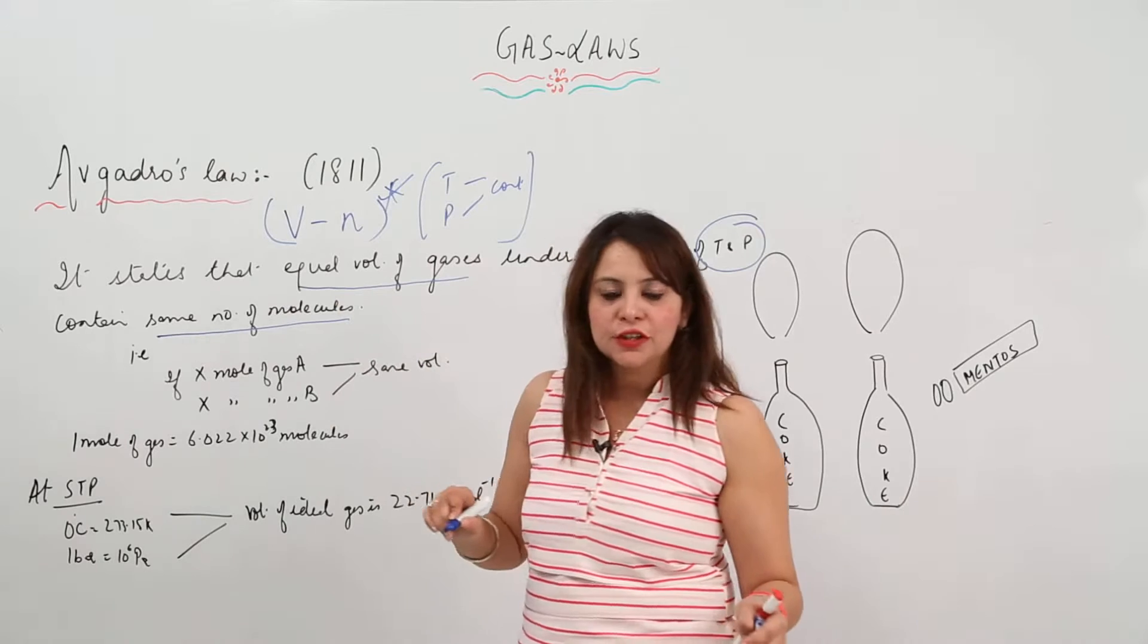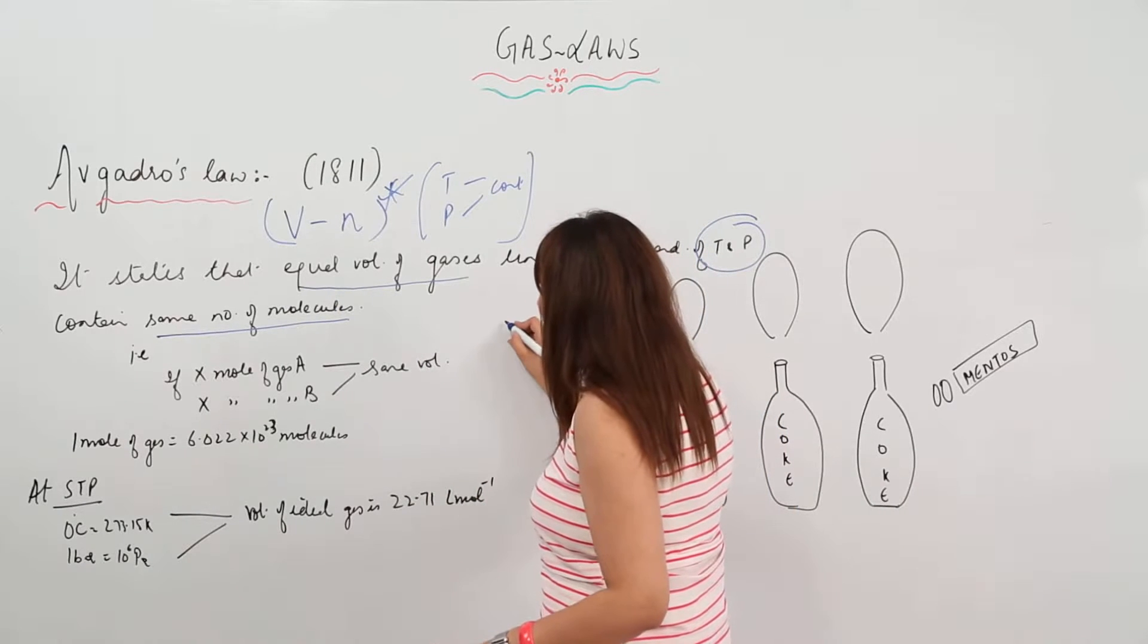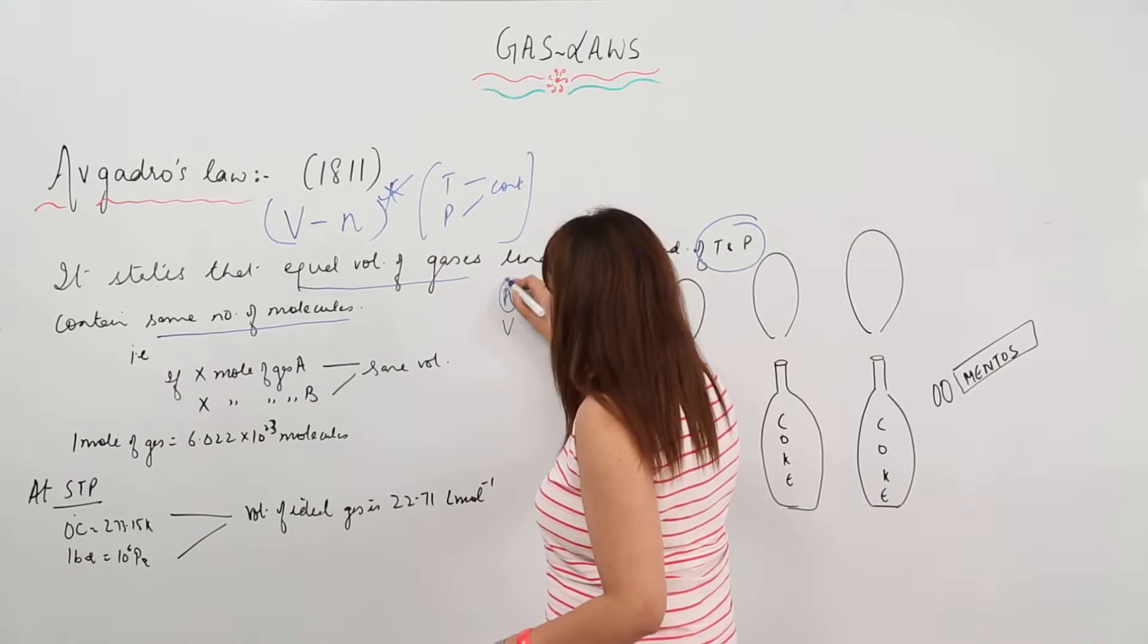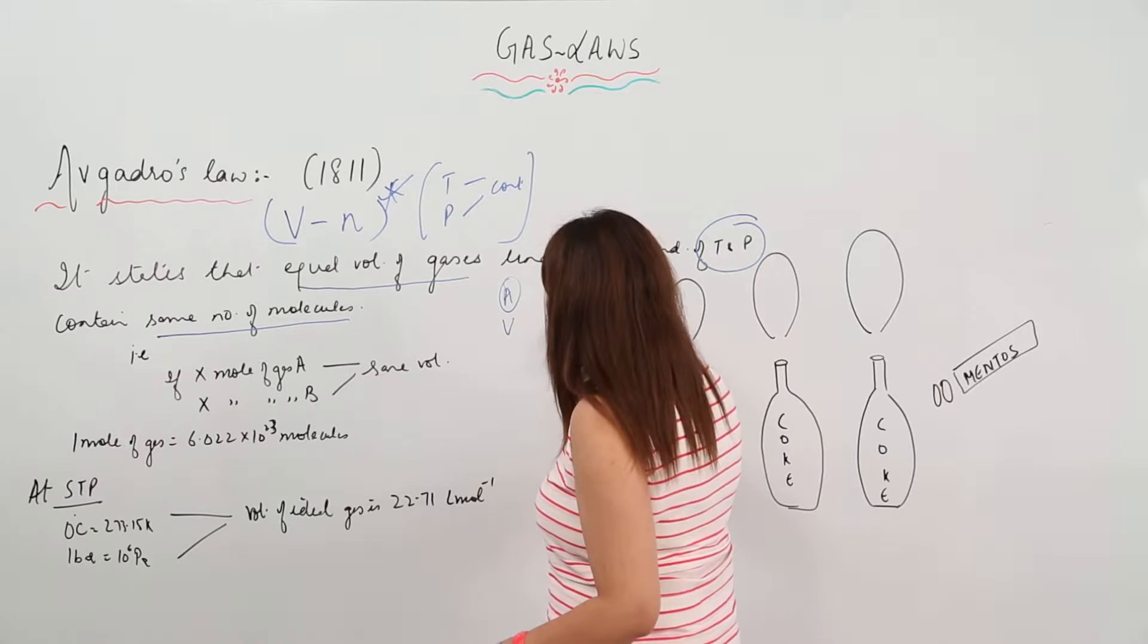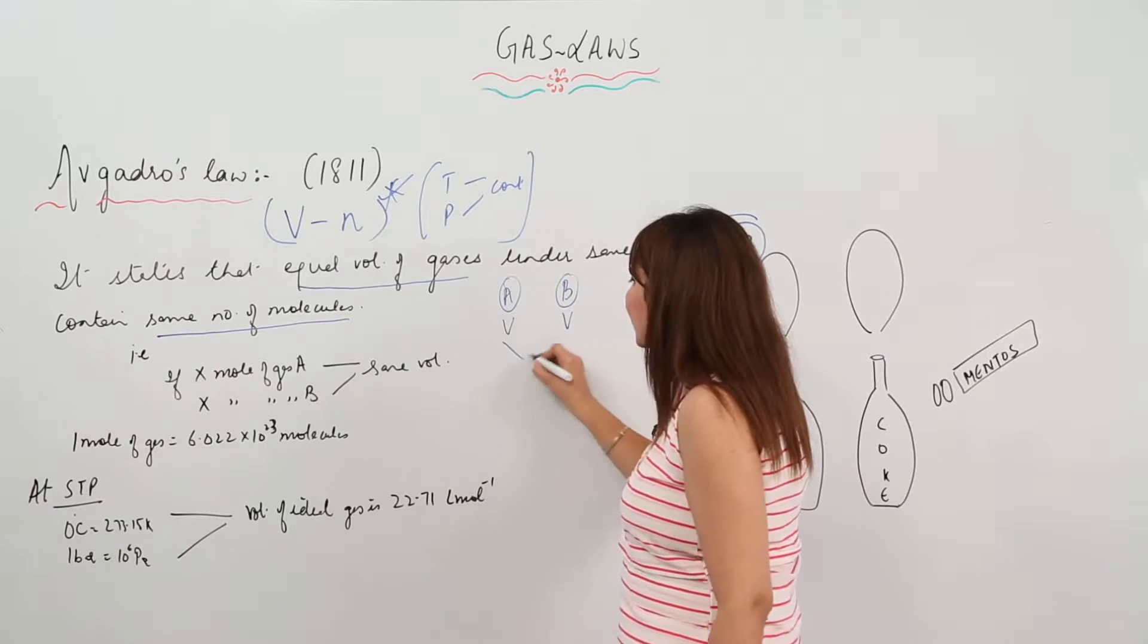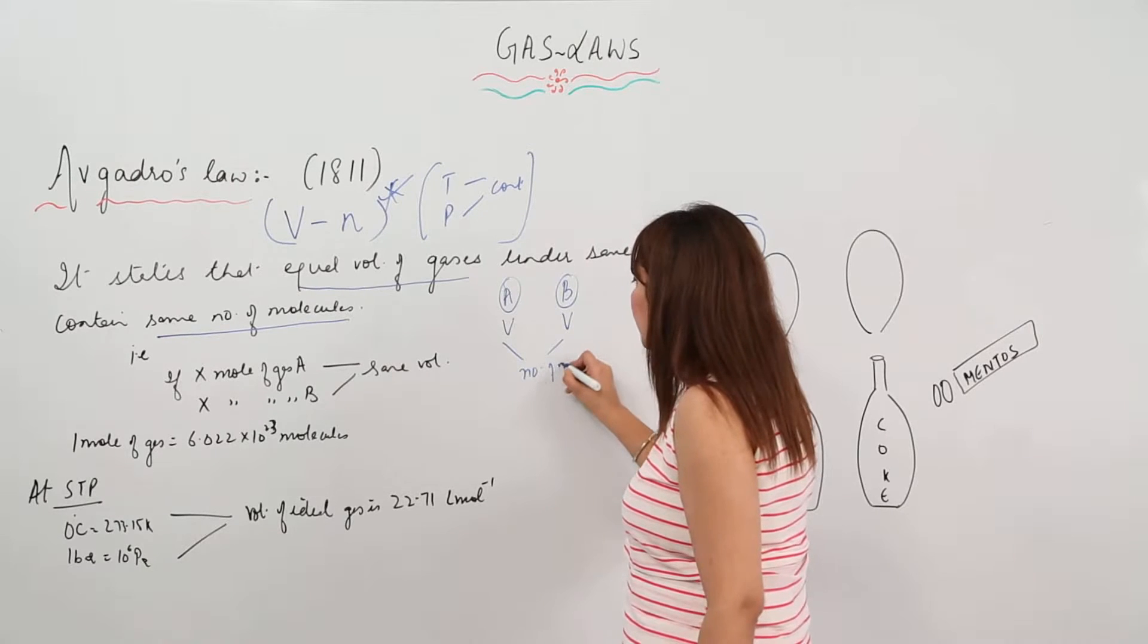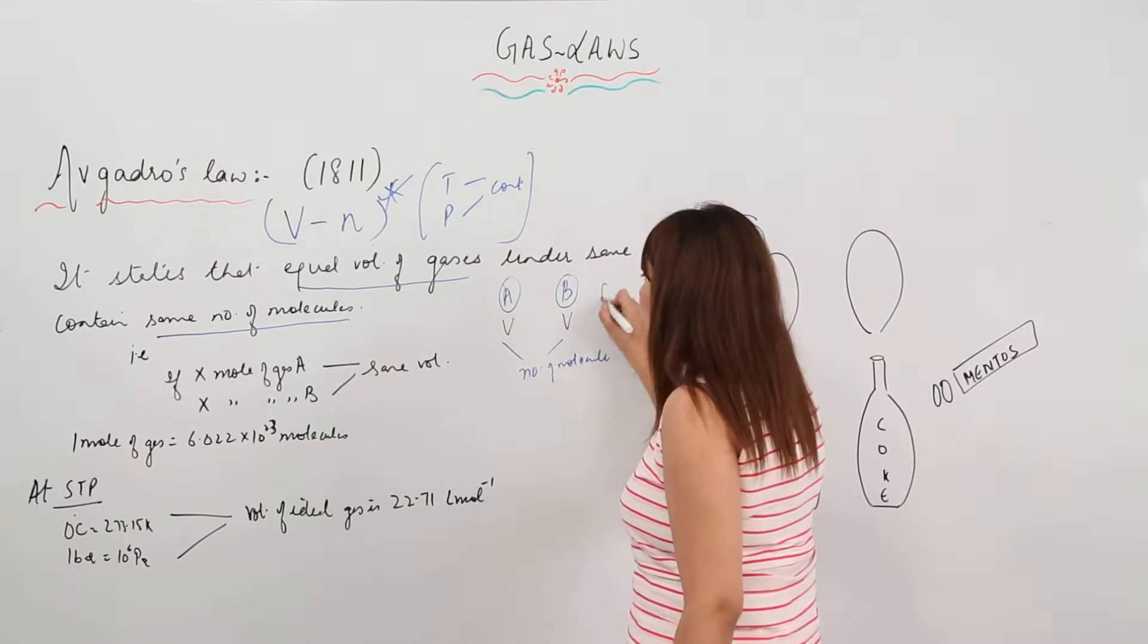So suppose if I have gas A whose volume is V, and gas B whose volume is again V, they contain the same number of molecules, provided that the temperature and pressure remain the same.